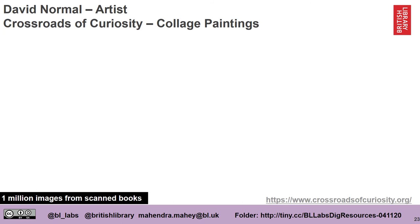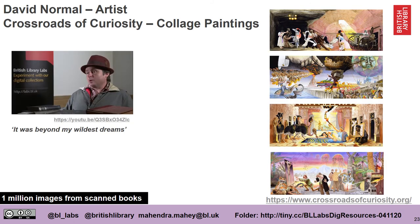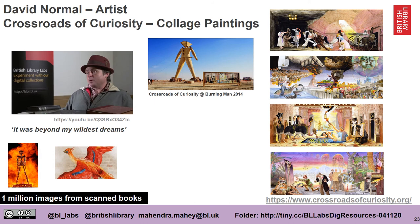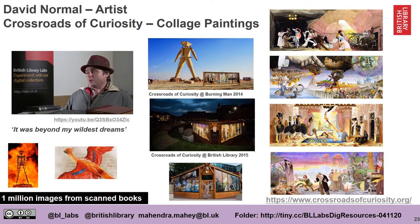David Normal, a surrealist artist from California, made four collage paintings with our Flickr Commons collection. He then made these paintings into huge light boxes which were exhibited around the Burning Man in 2014. We then worked with David to bring that artwork to the British Library and had it installed outside in our piazza. We also developed an app which, when you hovered over the paintings and it recognised an image, would take you back to the book where that image came from.